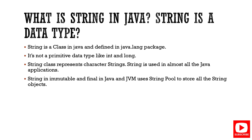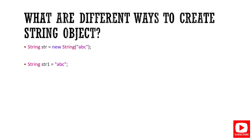Our first question is: what is String in Java, and is String a data type? This is a tricky and confusing question. Most of us think that String is a data type, but String is actually a class in Java, defined in the java.lang package. It's not a primitive data type. The String class represents character strings, and String is immutable and final in Java — it cannot be changed. It uses the string pool to store all String objects.